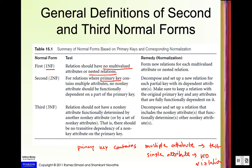The reason is that second normal form says no non-key attribute should be functionally dependent on a part of the primary key. If there are multiple attributes in the key, some non-prime attribute could be partially functionally dependent on the primary key. But if there is a single attribute, all non-prime attributes will be fully functionally dependent on the primary key.